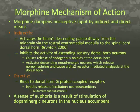Morphine can dampen nociceptive input by indirect and direct means. Indirectly, binding of morphine in the brain activates the descending pain pathway and inhibits the activity of sensory dorsal horn neurons. That pathway includes the release of endogenous opioids at the dorsal horn and the activation of descending noradrenergic neurons, which release norepinephrine and cause alpha-2 receptor-mediated analgesia at the dorsal horn.